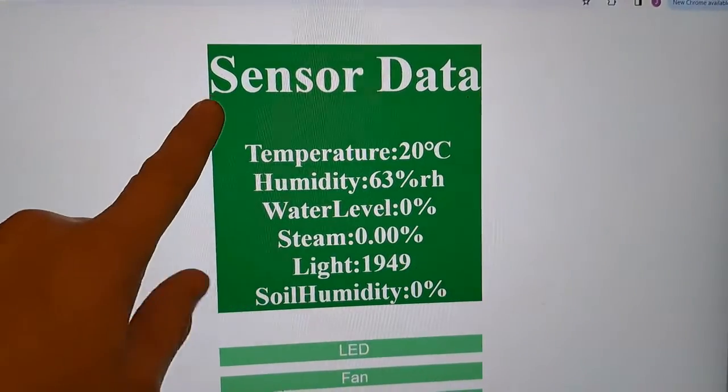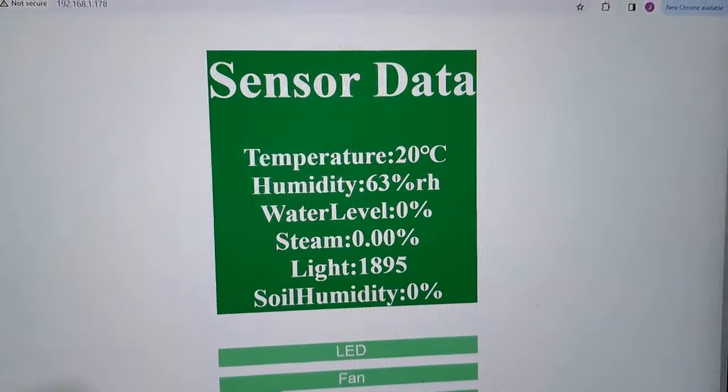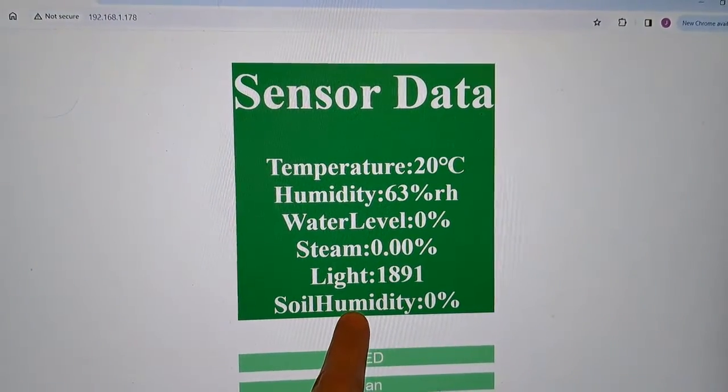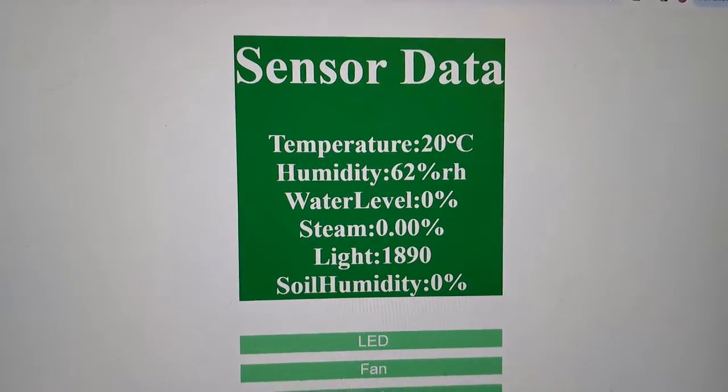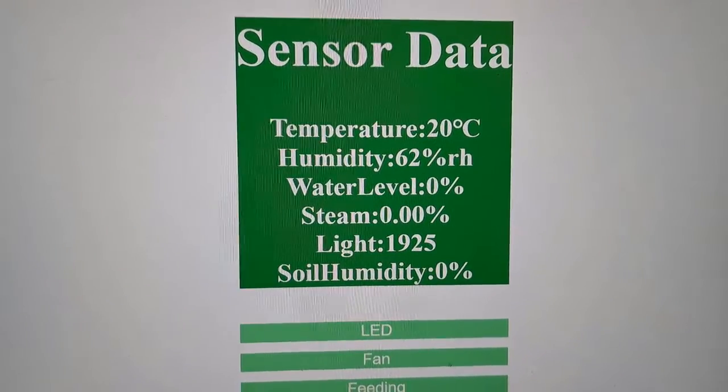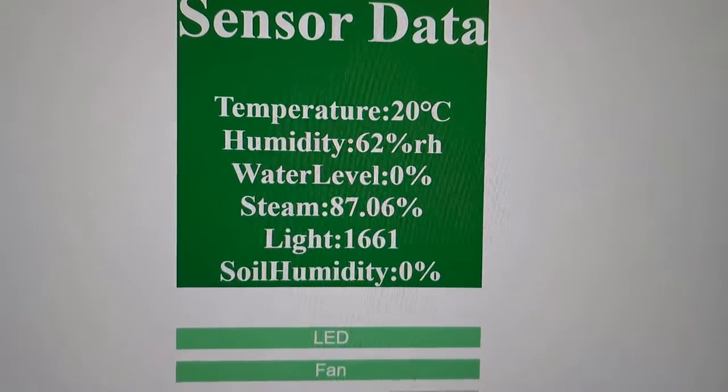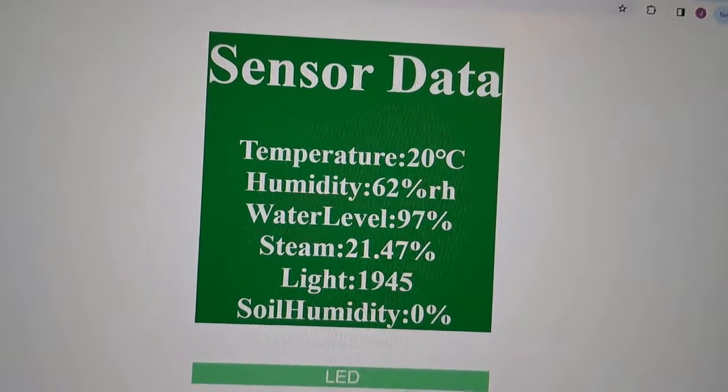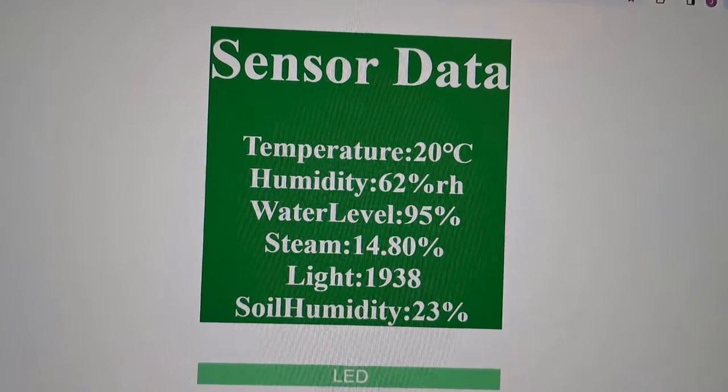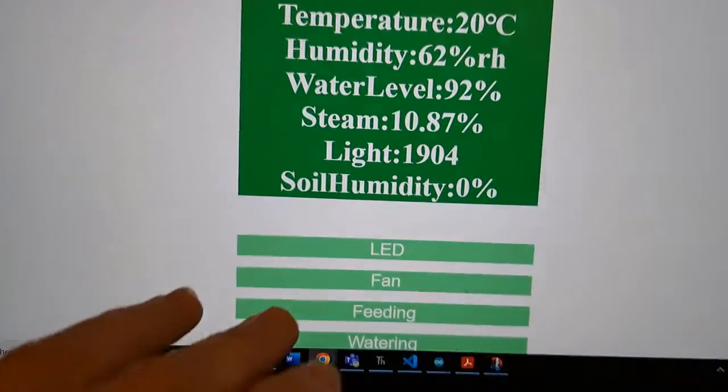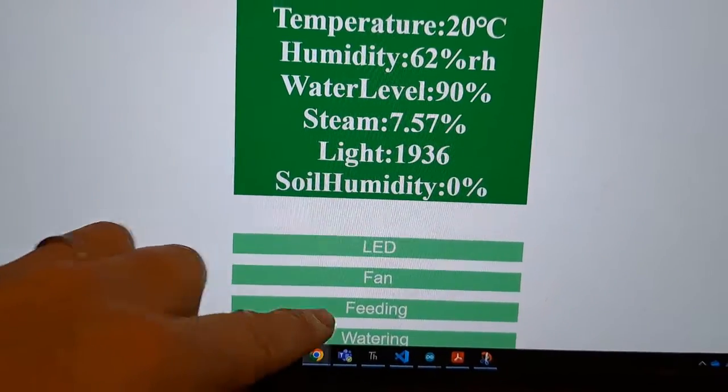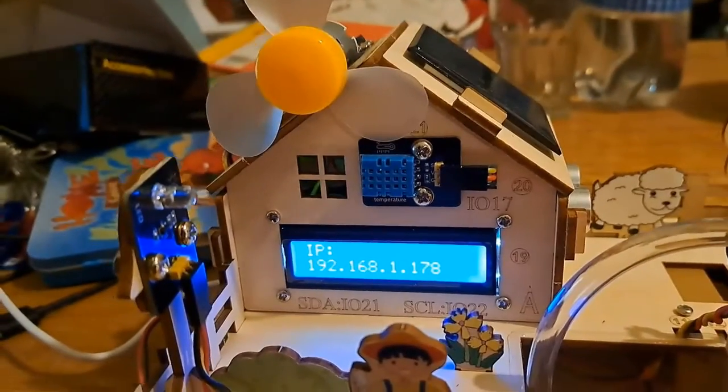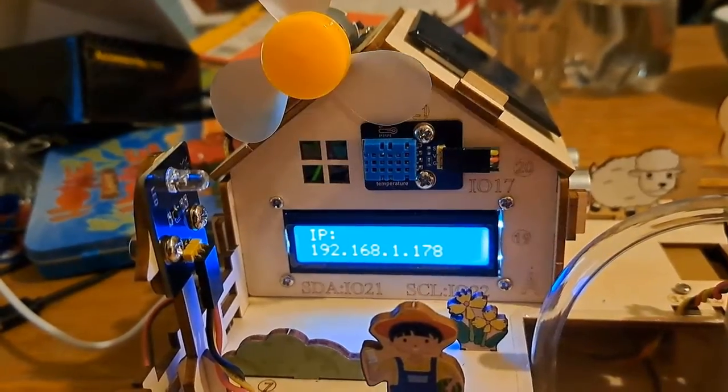Here's the website that project 11.2 makes when you've got the Wi-Fi connected to the website. And we can see that it's printing out various sensor information for us and we can check that they're right. For example, if I put some water on the steam sensor, you can see that goes up. If I put it on the water level sensor, that goes up and if I put it on the soil humidity sensor, that goes up. And then there are more sensors down here. So if we click LED one time, then this LED light comes on. If we click it again, it goes off.